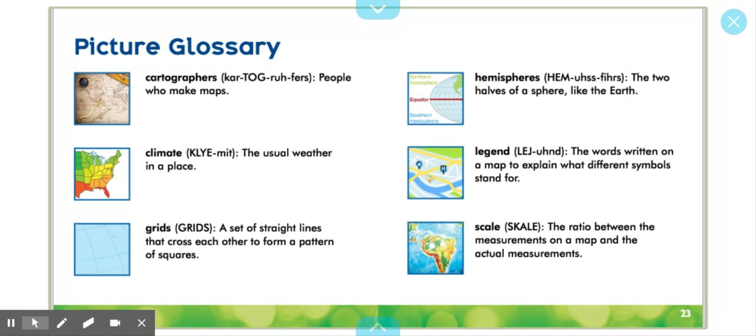Legend: The words written on a map to explain what different symbols stand for. Scale: The ratio between the measurements on a map and the actual measurements.